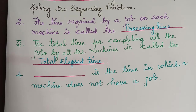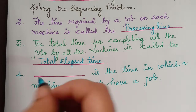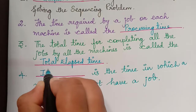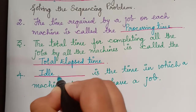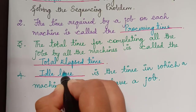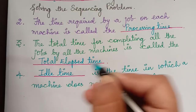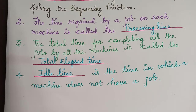The next question is: dash is the time in which a machine does not have a job. That is, the time in which the machine stays idle. So that is known as the idle time. Idle time is the time in which a machine does not have a job.